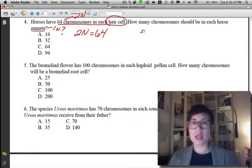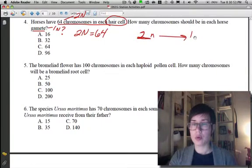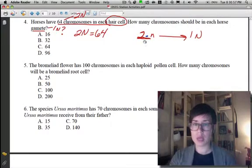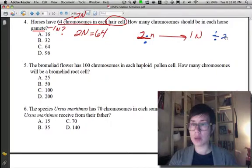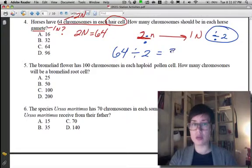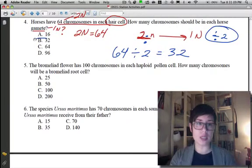So, I'm going to write 2N. And we're going to 1N. And I'm going to use my word art again. Turn this into a division symbol. So, I know to find my answer, I'm going to be dividing by 2. So, 64 divided by 2 gives us 32. So, the correct answer should be B.